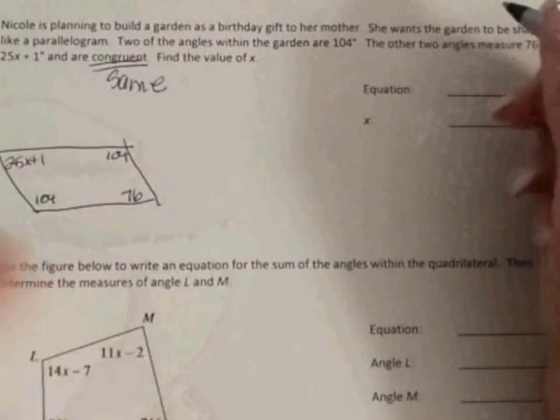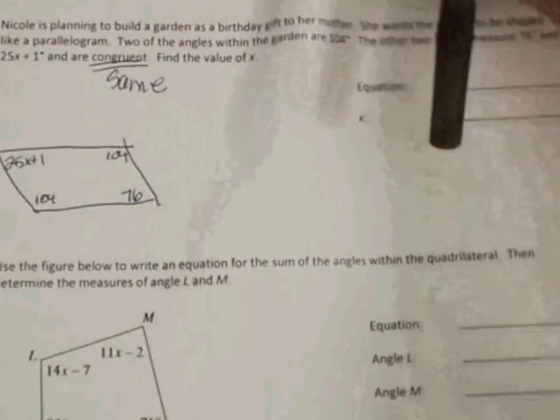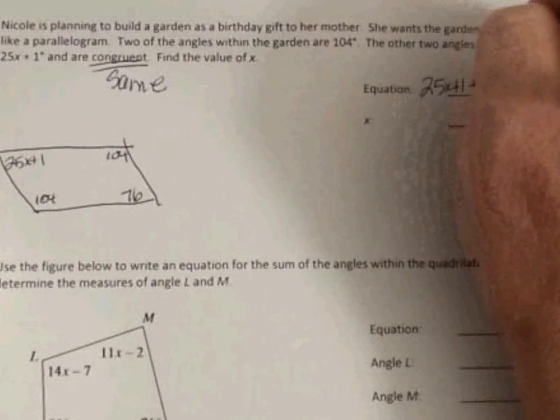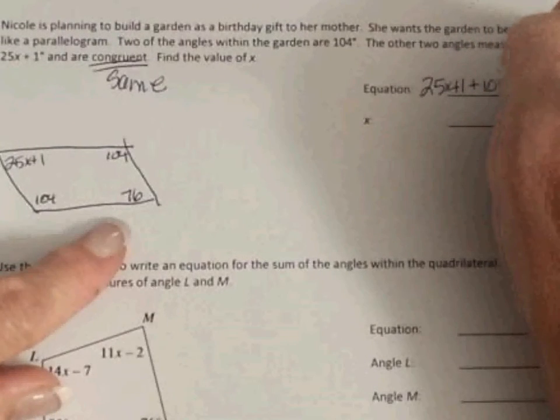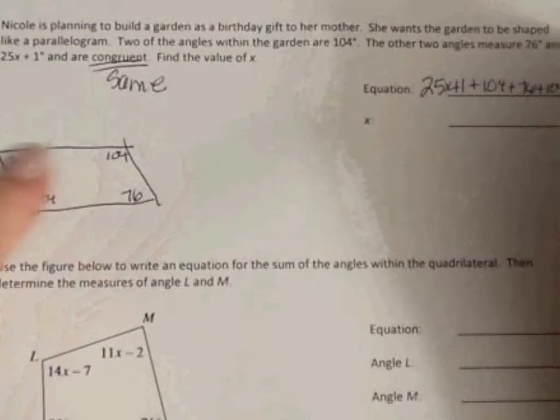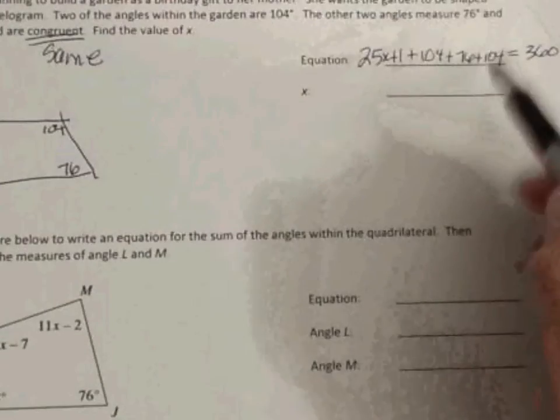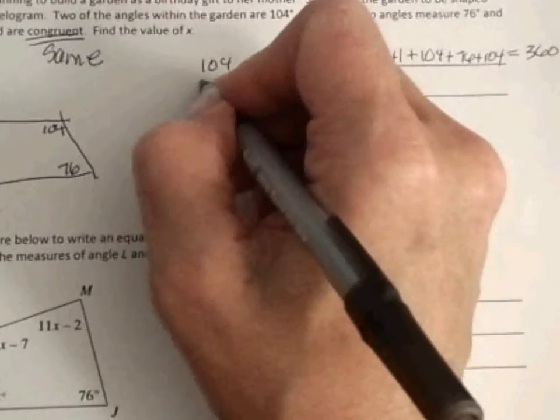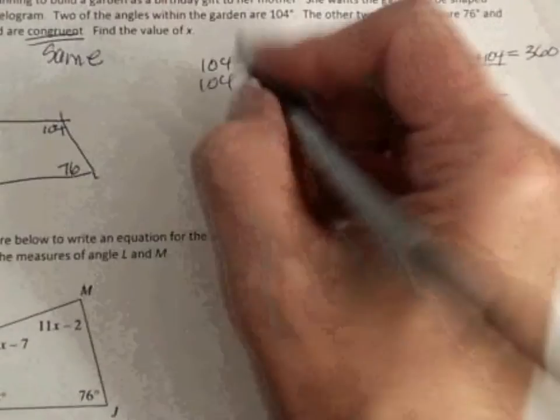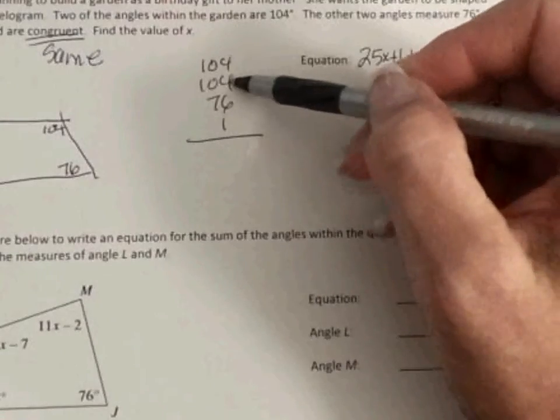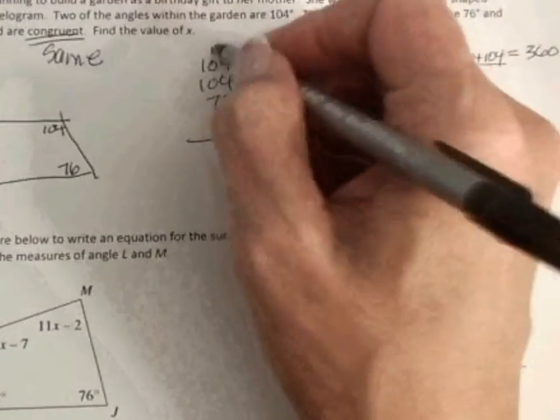So let's come over here and write our equation. So we know four of these angles add up to be 360. So we have 25x plus 1 plus 104 plus 76 plus 104. I just started here and went around. And we know all that equals 360. So we're going to add all these up. So I have 104 plus 104 plus 76 plus 1. So that's 15, carry my 1, 8, and 2.